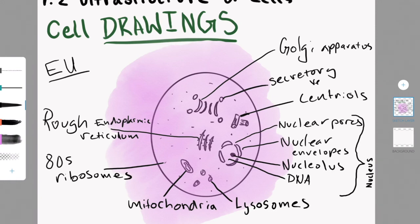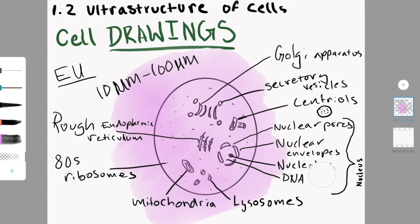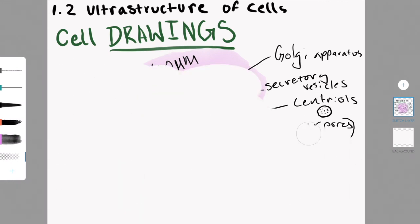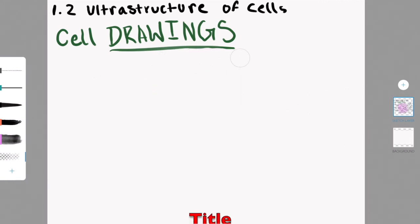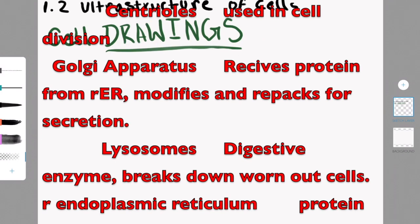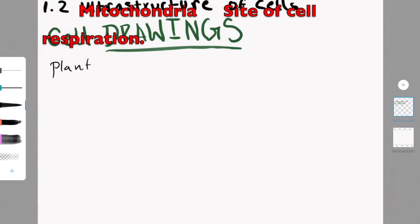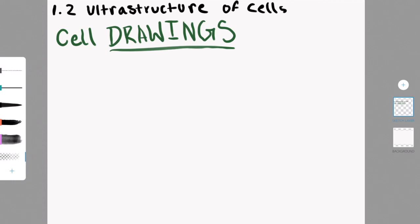The centrioles are used for cell division. There are four things that make up the nucleus: the nuclear envelope, the nuclear pores, the nucleolus, and the DNA. There are also lysosomes, which are digestive enzymes that break down worn-out cells, or worn-out cell parts, or particles.